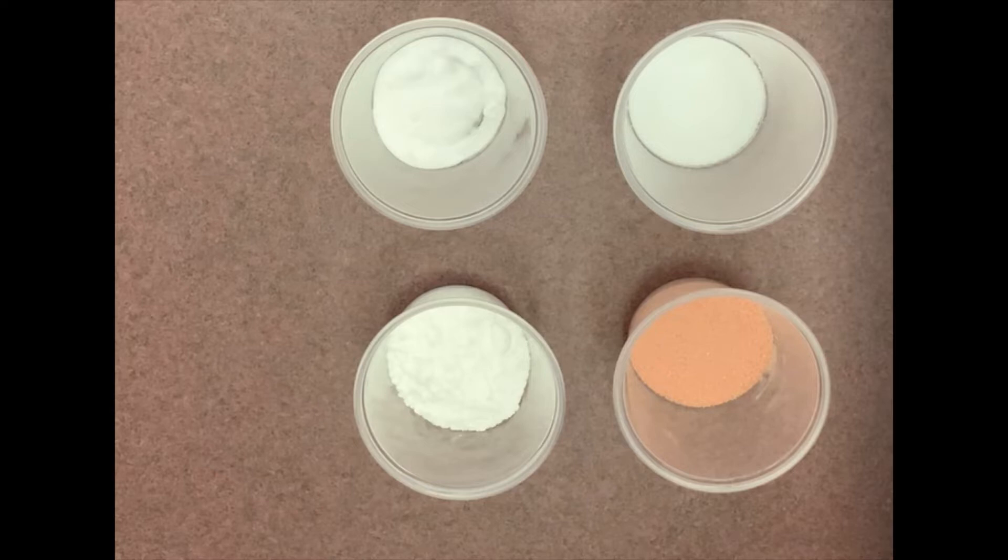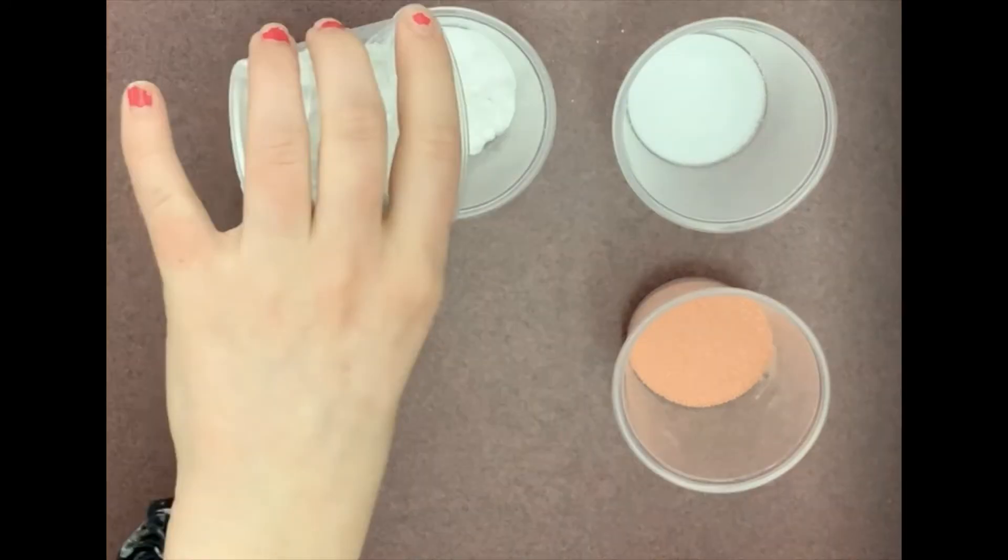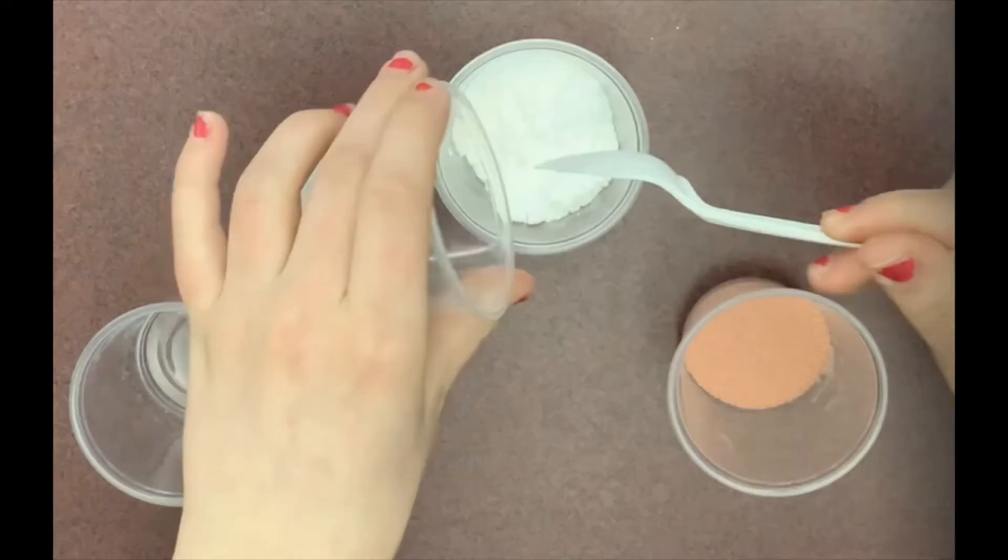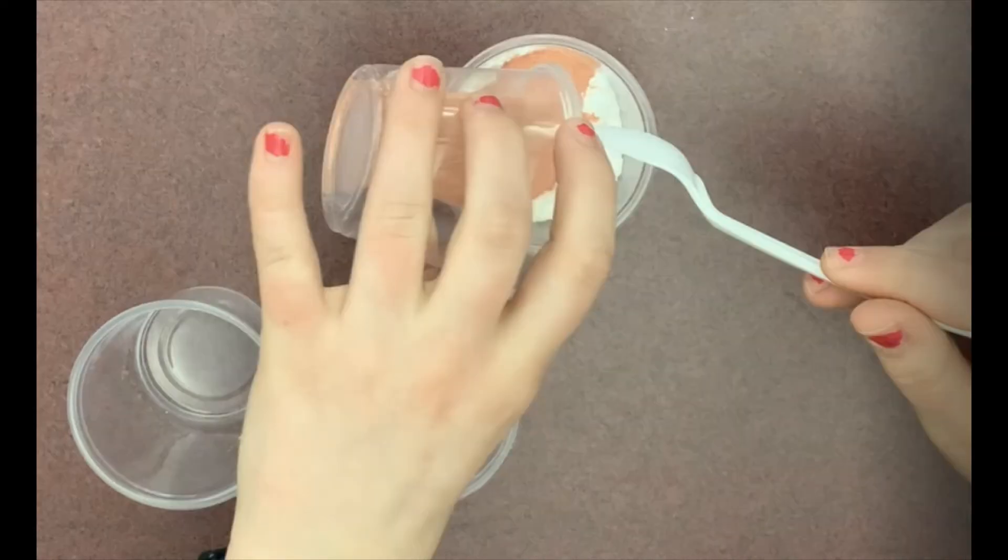First you're going to measure out each ingredient into a small bowl. Then you are going to mix and taste it. You are welcome to vary the amount of ingredients you add to make the flavor tastier to you. The sugar adds sweetness while the citric acid makes it sour.